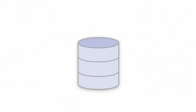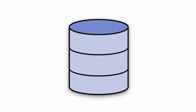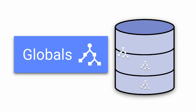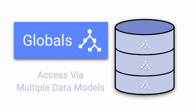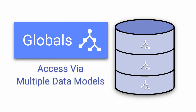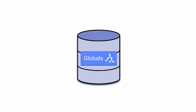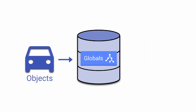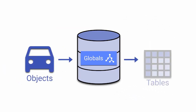Inside databases, the data is stored in structures called globals. Globals are the foundation of the performance and flexibility of Cache. Updating and retrieving data stored within globals is fast. The use of globals enables Cache to provide access via multiple data models at the same time. For example, when application code saves an object, the object is immediately accessible as a row in a table.